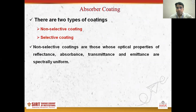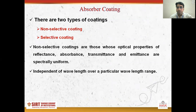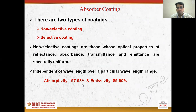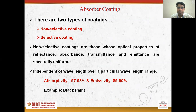The non-selective type coatings are those whose optical properties of reflectance, absorptance, transmittance, and emittance are spectrally uniform and independent of the wavelength over a particular wavelength range. The absorptivity is around 97 to 98 percent, which is high, and the emissivity is also higher, around 89 to 90 percent. One example of non-selective coating is black paint, which you can apply over surfaces to achieve a non-selective coating.